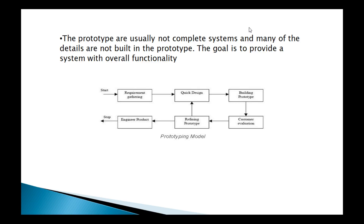Why do we gather requirements first? Because without requirements, we cannot produce any output. To produce an actual output, we need some input. So requirements are needed, and the customer's input is needed. Depending upon the model and the type of project, requirements are first gathered, then a design is drawn, and then a prototype is built based on that design.